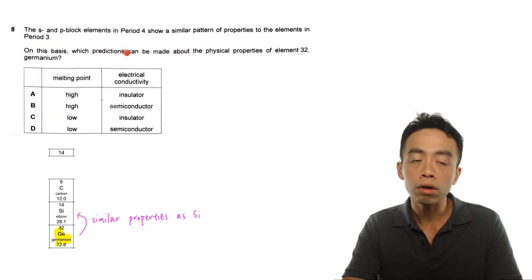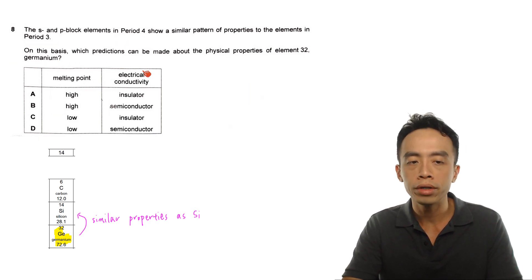We are given 4 options involving the melting point and the electrical conductivity: high melting point versus low melting point, insulator versus semiconductor.